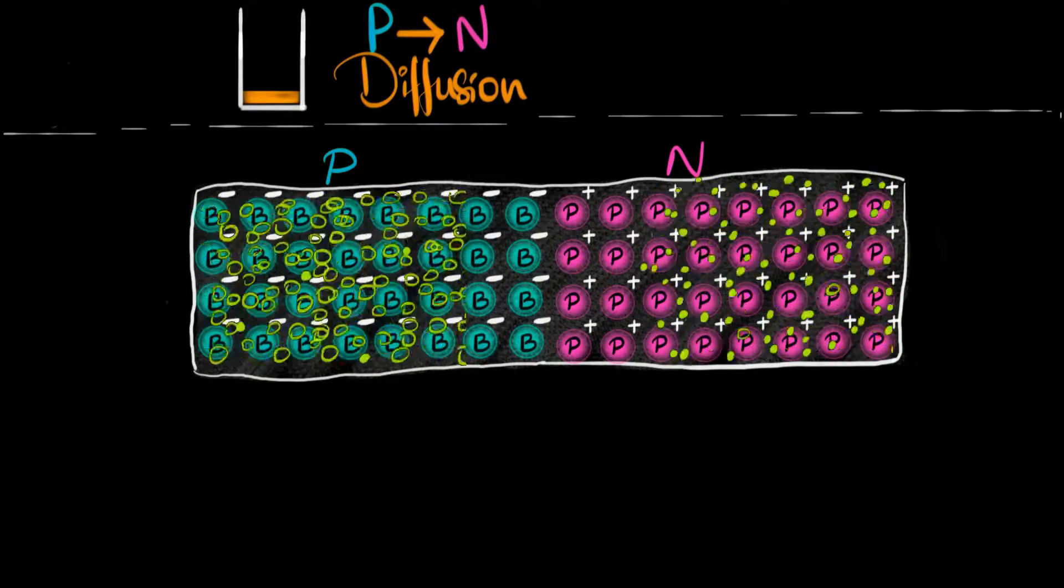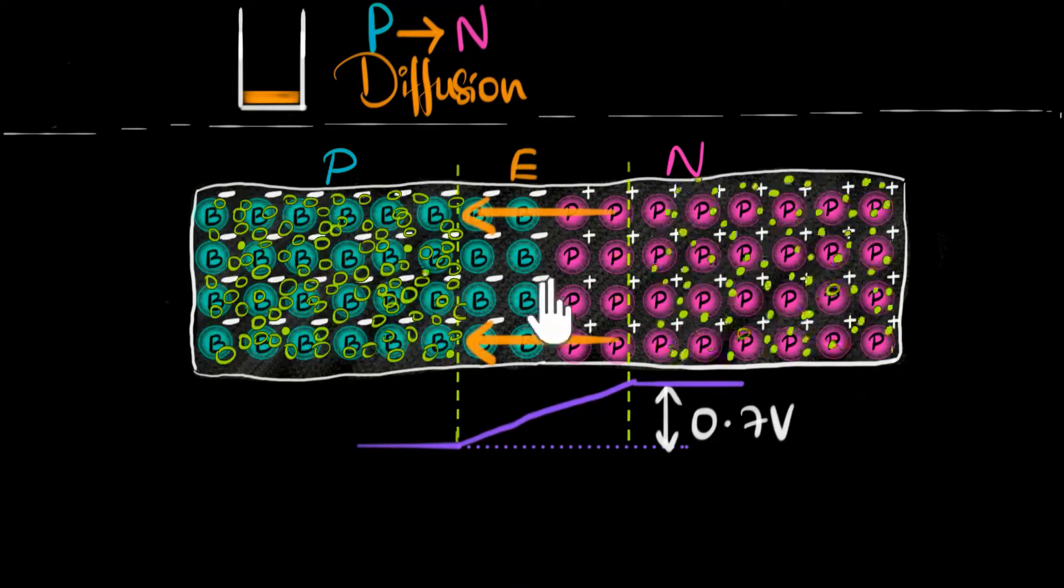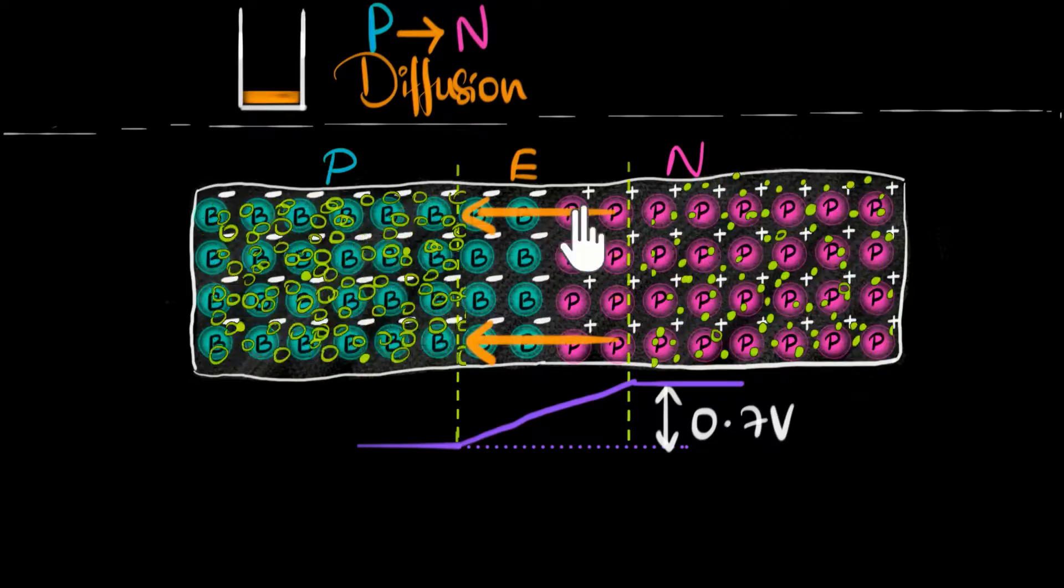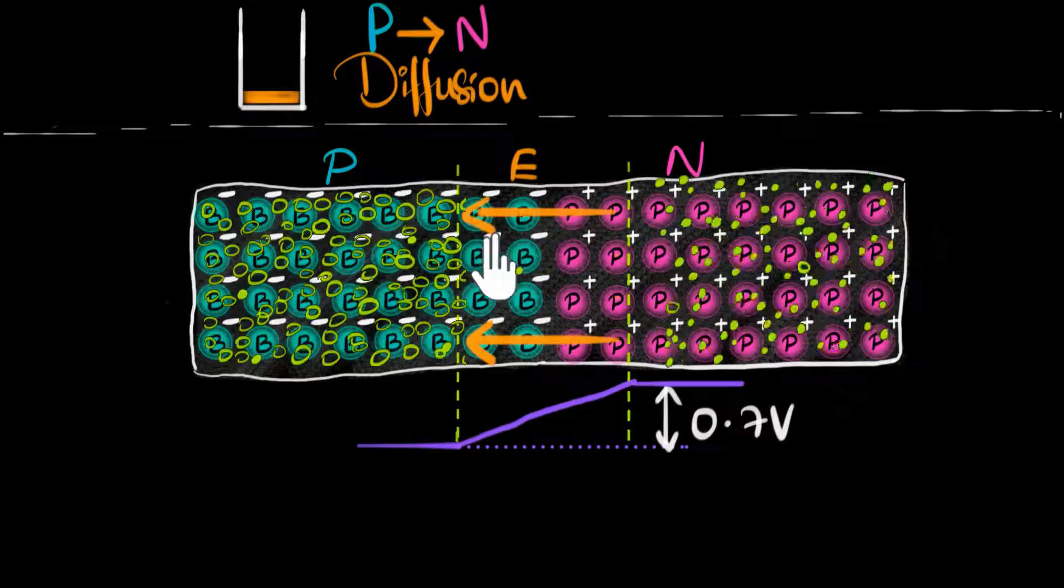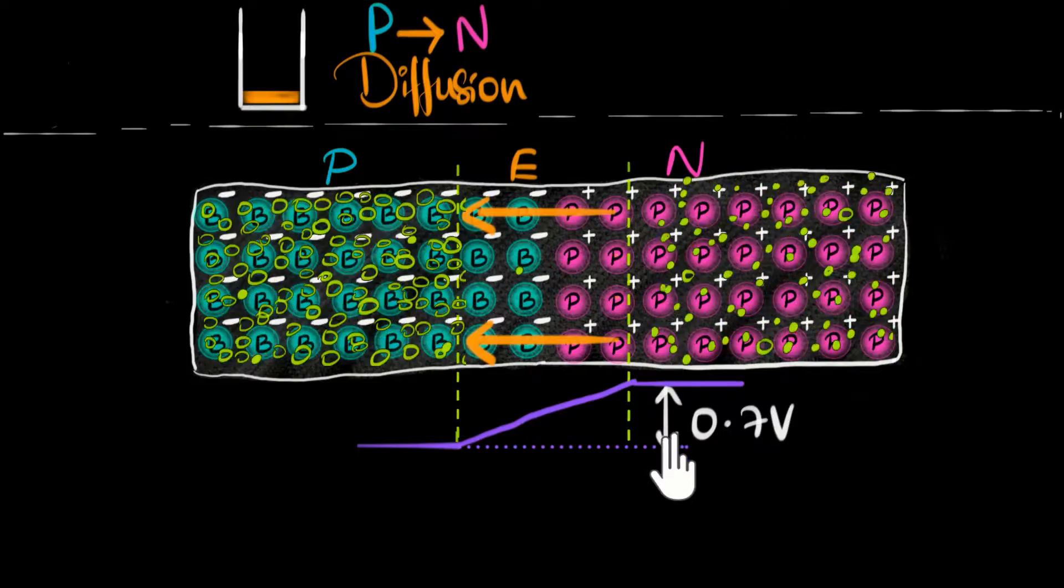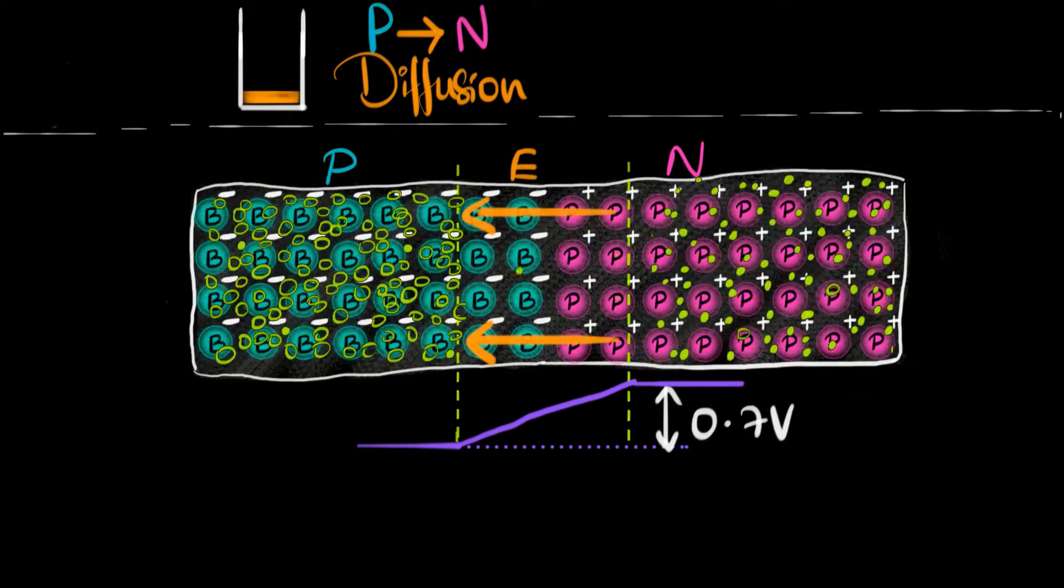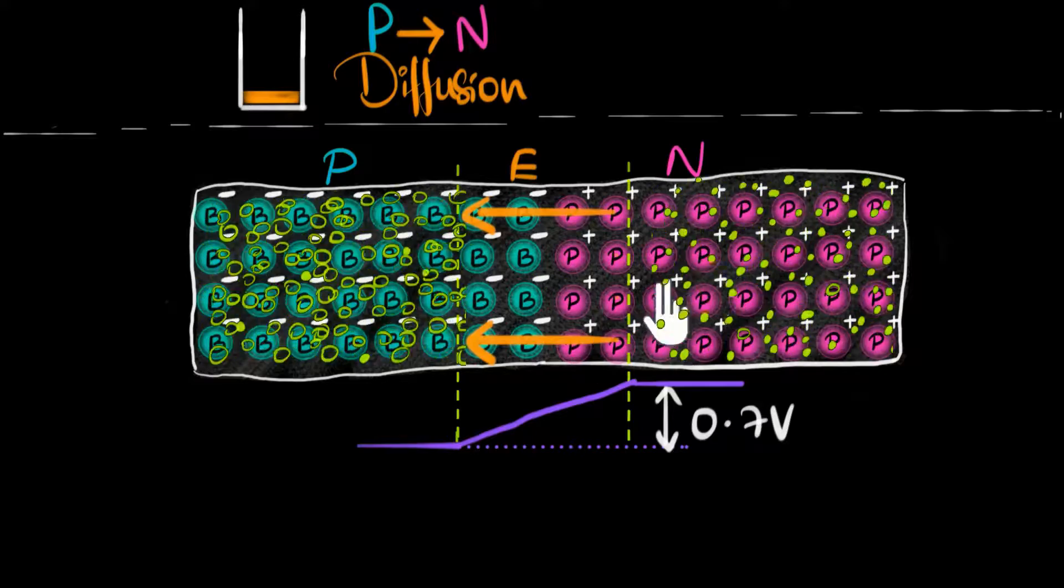The reason it is so low is because a barrier exists right at the junction. Due to the recombination effect, almost all the holes and electrons have destroyed each other. An electric field exists and that pushes the holes and the electrons in the opposite direction. We can think of it as a potential barrier, and that barrier is about 0.7 volts for silicon at room temperature. But there's a second kind of current. This barrier acts like a downhill for the minority charge carriers.